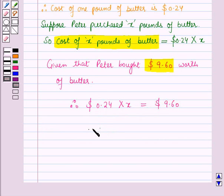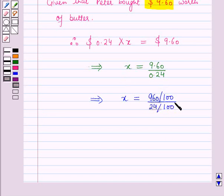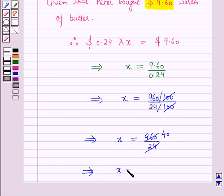This implies x is equal to 9.60 upon 0.24, which implies x is equal to 960 upon 100 all upon 24 upon 100. Now 100 is cancelled with 100, so this implies x is equal to 960 upon 24. Now 24 into 40 is 960, so this implies x is equal to 40.